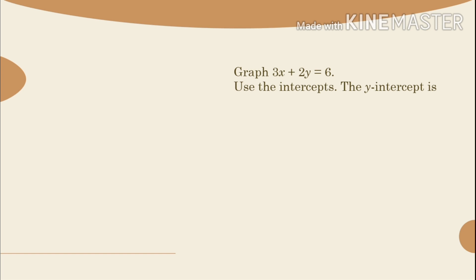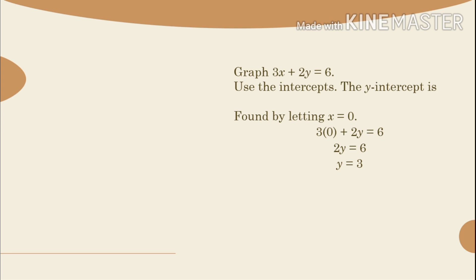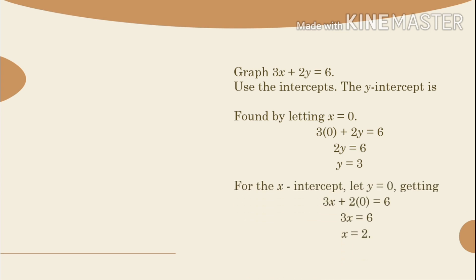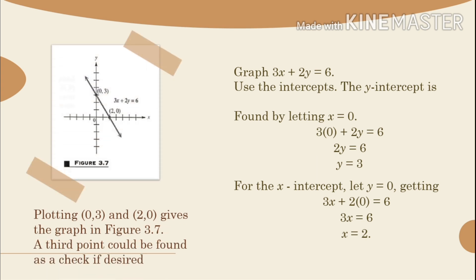Example: Graph 3x plus 2y equals 6. Use the intercepts. The y-intercept is found by letting x equal 0: 3 times 0 plus 2y equals 6, so 2y equals 6, and y equals 3. For the x-intercept, let y equal 0: 3x plus 2 times 0 equals 6, so 3x equals 6, and x equals 2. Plotting (0, 3) and (2, 0) gives the graph shown in figure 3.7.